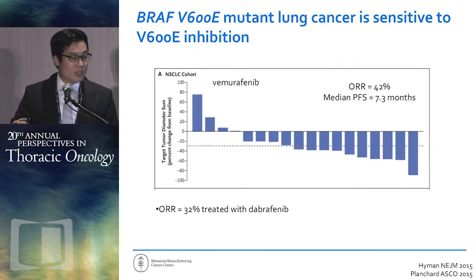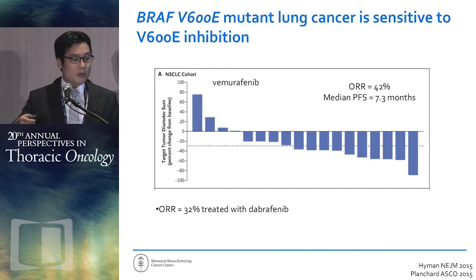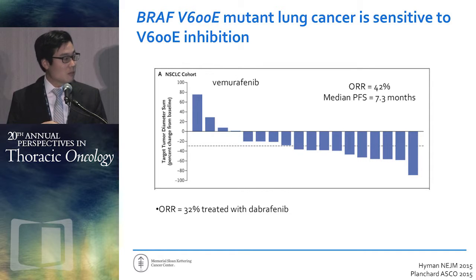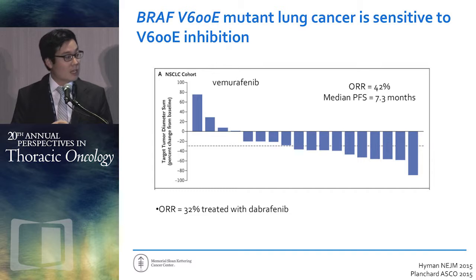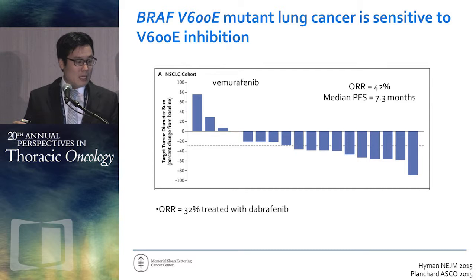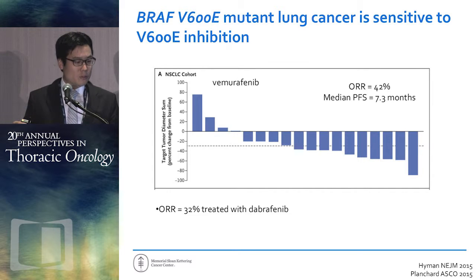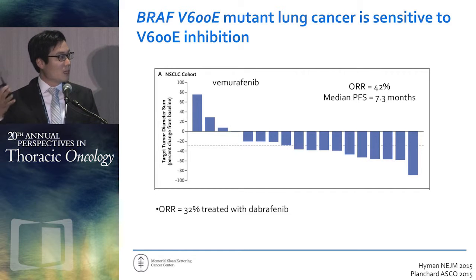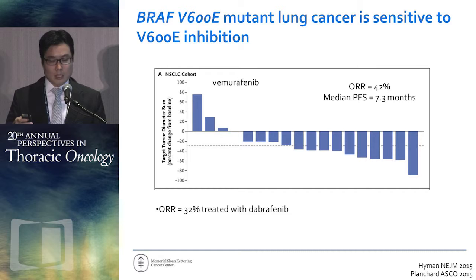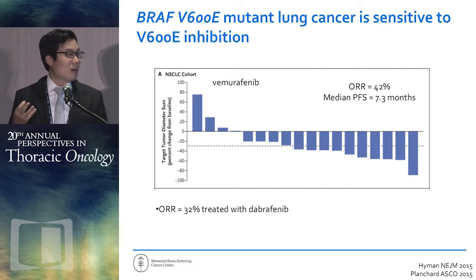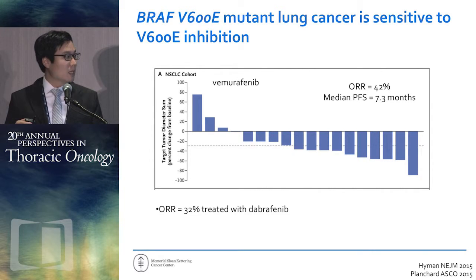We know V600E is sensitive to V600E-specific inhibitors. Vemurafenib data published by David Hyman from the phase 1 group at Memorial showed non-small cell lung cancer patients with a response rate of 42% and a median PFS of 7.3 months. Dabrafenib has also been studied with a single-agent response rate of 32%. The results are good, but not quite at the level of erlotinib or afatinib in EGFR mutant lung cancer, or crizotinib in ALK lung cancer — so clearly there's something we're missing.